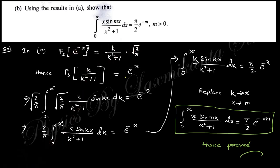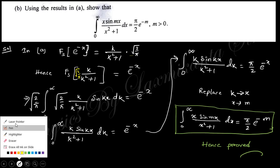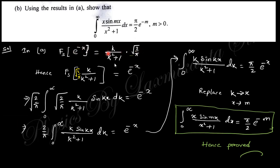There appears to be a missing factor of √(2/π) in the result, so we bring the constant to the right-hand side, giving a factor of π/2. The Fourier sine transform of e^(−x) is then established. Using the integral form of the Fourier transform and replacing k by x and x by m in the result, we obtain the final expression. This completes the Fourier sine transform question.